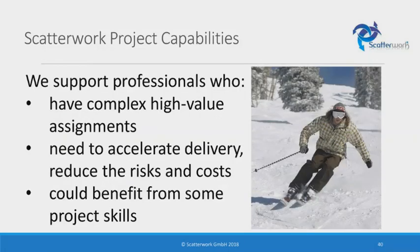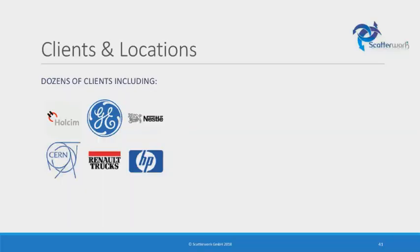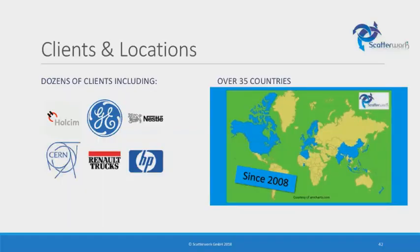To summarize what Scatterwork can do: we have professionals who work with people who are themselves professionals in whatever line of business. They don't want to be project managers, but they do want to benefit from project skills to make their work easier, faster, cheaper, and less risky. We have locations all over the place — North America, Europe, Asia, and New Zealand — and we'd be very happy to spread out into other countries on invitation. We have a lot of different types of workshops.